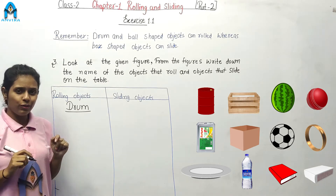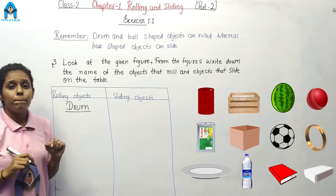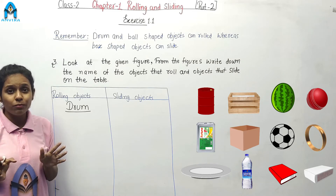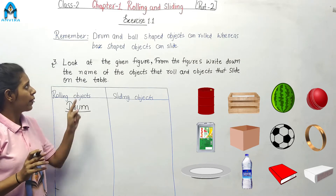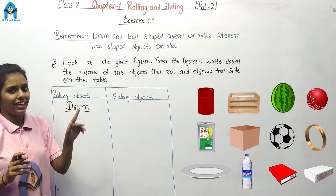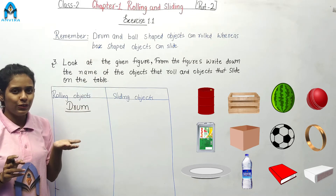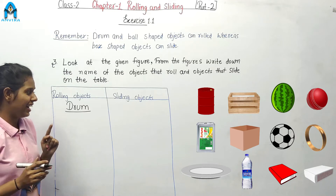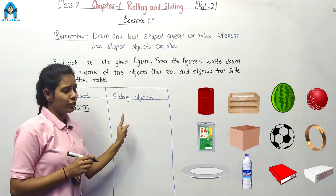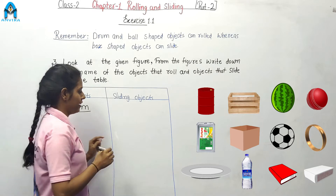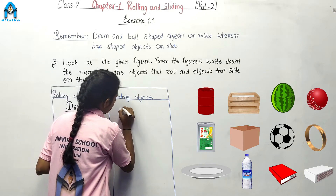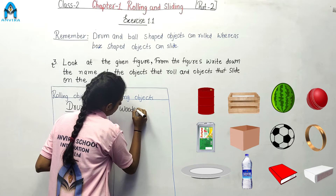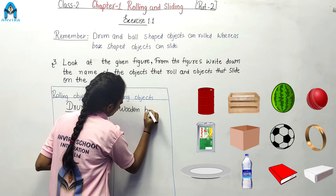Let's go to the next. This is a wooden box. Box shaped objects can slide. So, the wooden box can slide. We are writing wooden box on the sliding side.